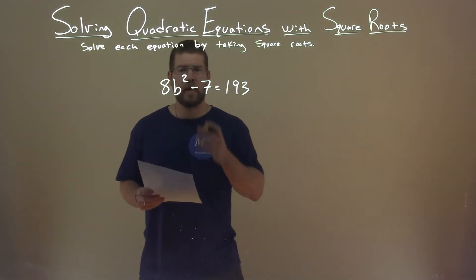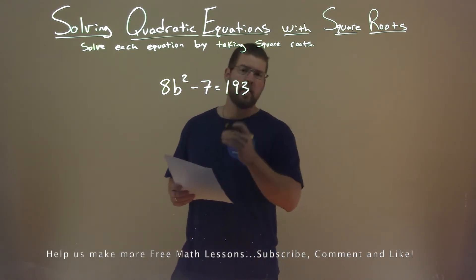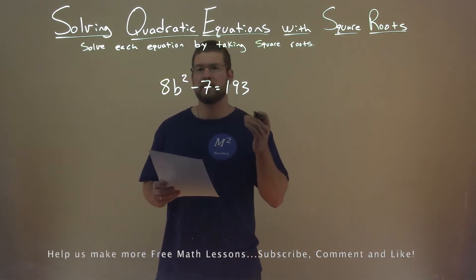We're given this problem right here: 8b squared minus 7 equals 193. We want to solve this equation by taking square roots.